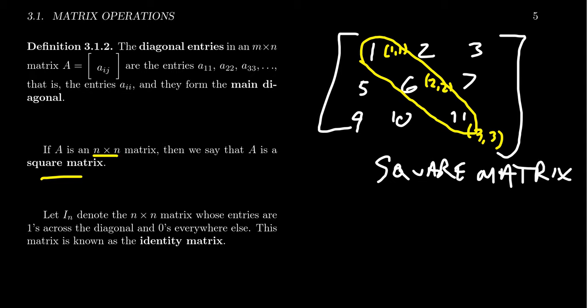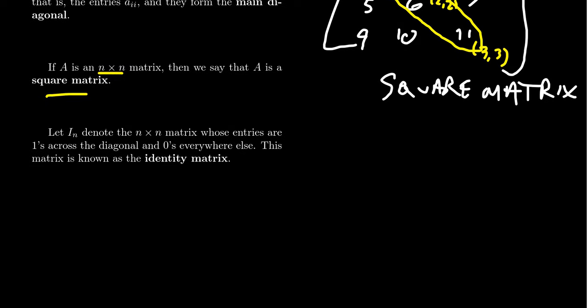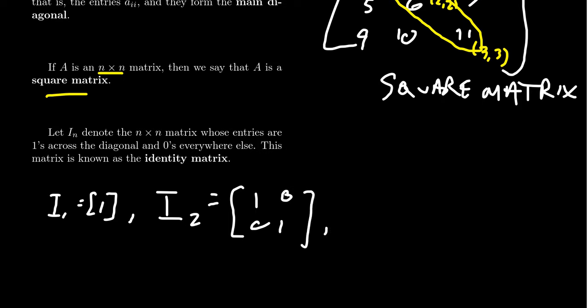We introduce the notation I_n to denote the n by n matrix with ones along the main diagonal and zeros everywhere else. For example, I_1 is just the matrix [1] — really indistinguishable from a scalar, but it is a square matrix. I_2 is the matrix [1 0; 0 1], and I_3 is [1 0 0; 0 1 0; 0 0 1].